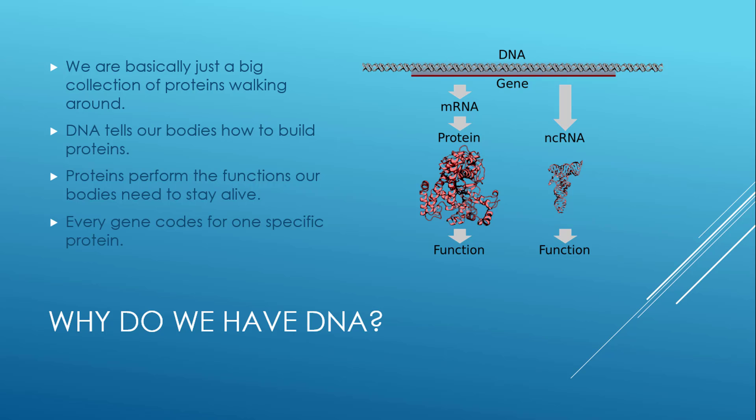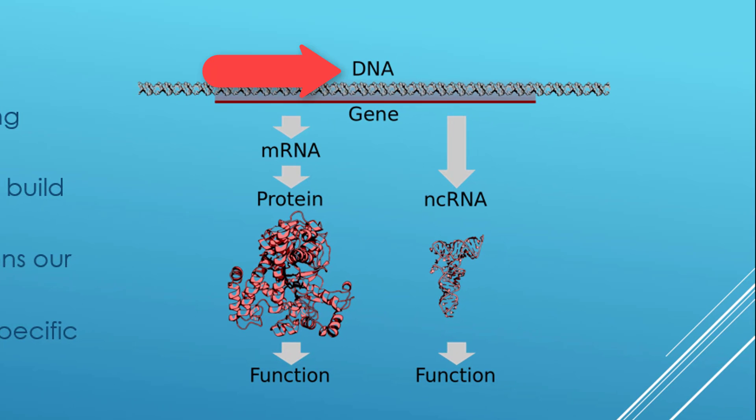Every gene in our body codes for one specific protein. In order to do a particular process, your body might need three or four or five proteins. That would mean there's one gene for each protein that needs to be produced. As you can see in this illustration, we start with DNA, it turns into RNA, which turns into a protein, which then functions as part of our body.